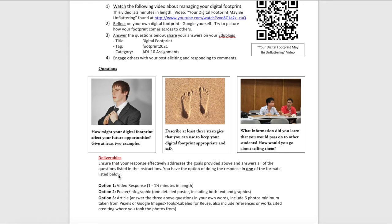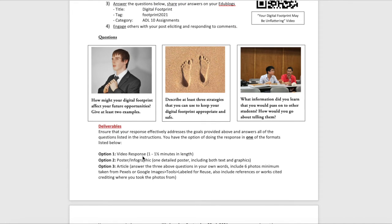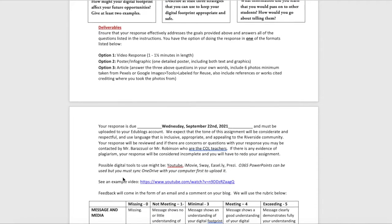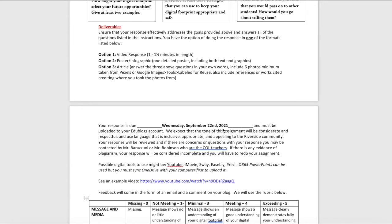The three questions are: How might your digital footprint affect your future opportunities (give at least two examples)? Describe at least three strategies to keep your digital footprint appropriate and safe. What information did you learn that you'd pass on to other students? You have three format options: a video response of one to one and a half minutes, a poster or infographic with text and graphics, or an article answering all three questions with a minimum of six photos from Pexels or Google Images with a works cited. The assignment is due Wednesday, September 22nd.